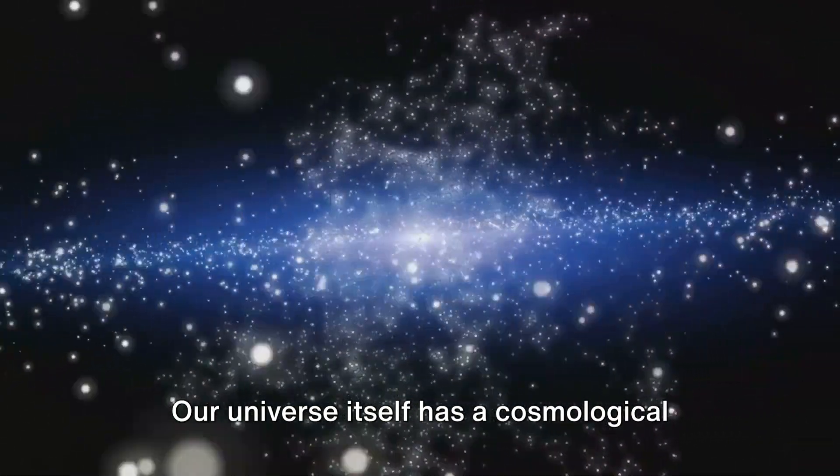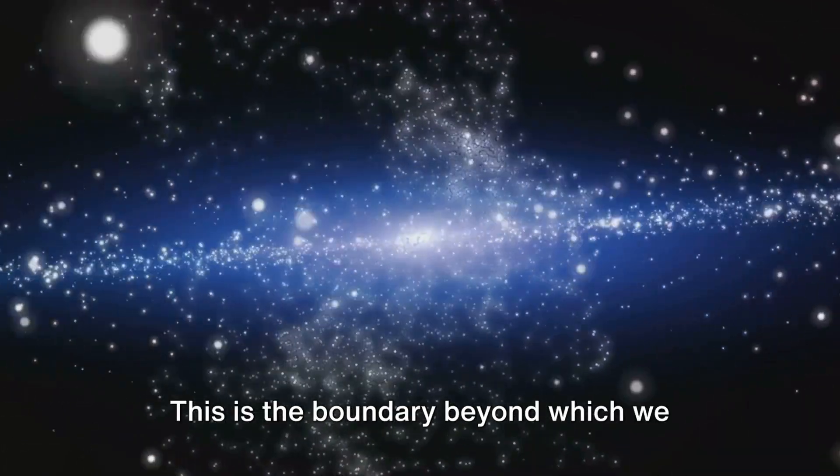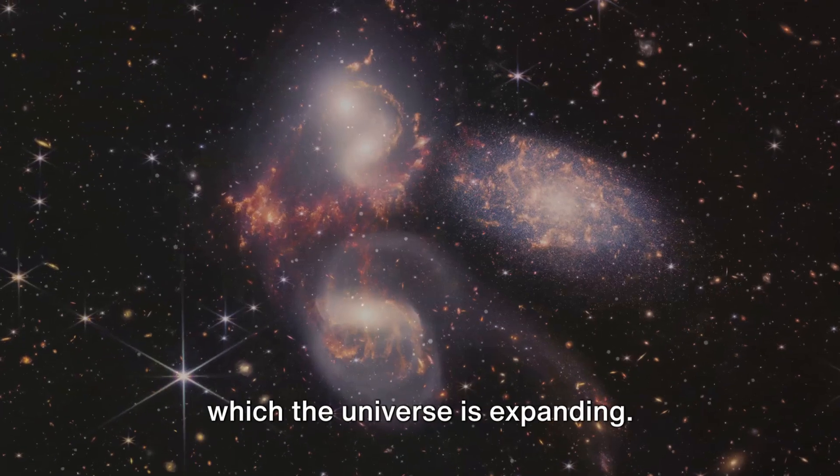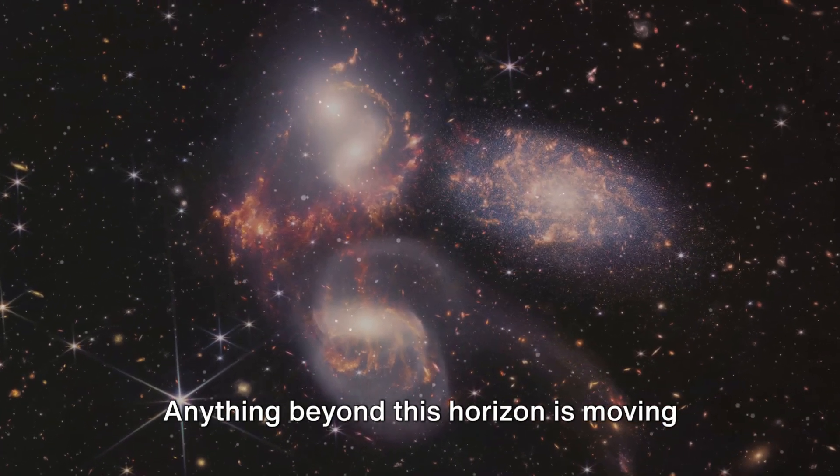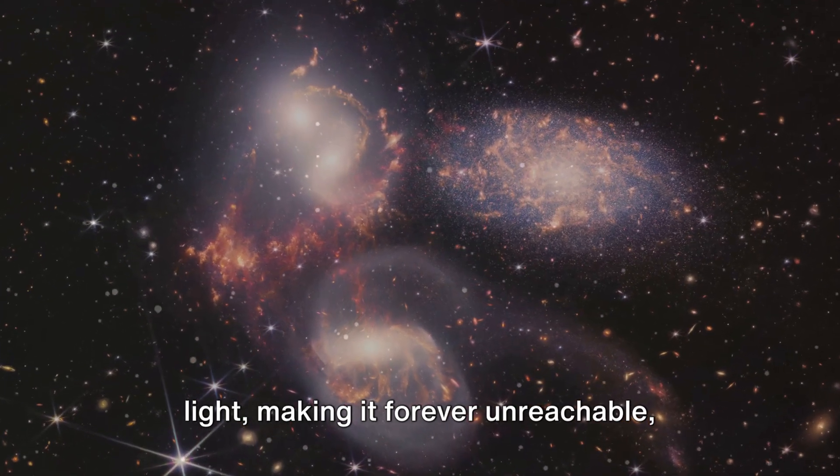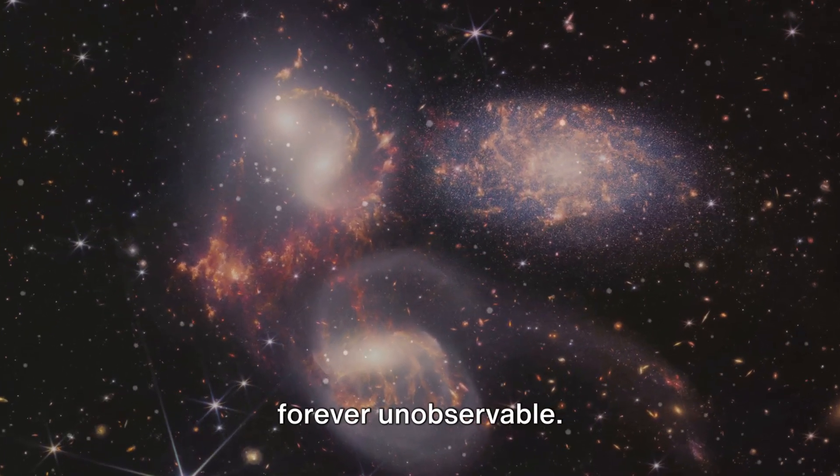Our universe itself has a cosmological event horizon. This is the boundary beyond which we cannot see, a limit set by the rate at which the universe is expanding. Anything beyond this horizon is moving away from us faster than the speed of light, making it forever unreachable, forever unobservable.